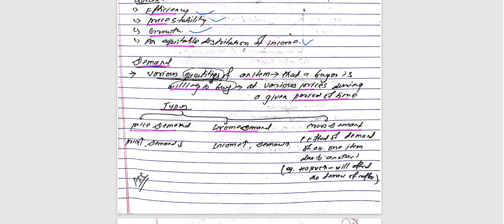This is the main objective of engineering economics, which relates to the quality of jobs, business, and employment. There are different types of data that can be built. Various quantities of items can be observed — different quantities at a given time, at a specific time, at various prices. Demand is the buyer's perspective. The types of demand are price demand, income demand, and cross demand.